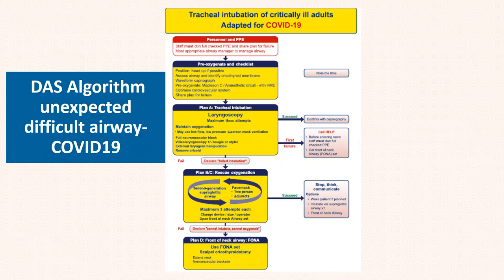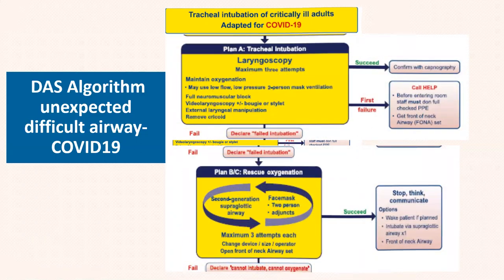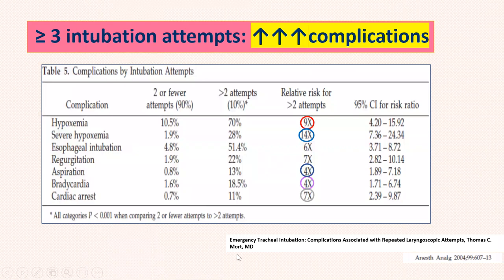If Plan A fails, go to Plan B and C: attempt a second-generation supraglottic airway with up to three attempts, using bag-mask ventilation in between attempts. If Plan B and C also fail and you are in a cannot-intubate, cannot-oxygenate (CICO) scenario, you must go to Plan D: front-of-neck access — scalpel cricothyroidotomy. More than three attempts dramatically increases complications: hypoxemia up to 9-14 fold, aspiration, bradycardia, and all other complications increase significantly.